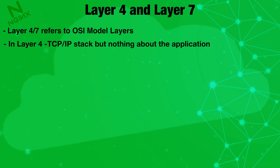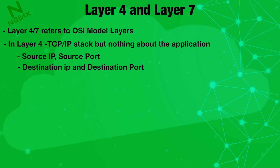At layer 4, the TCP/IP layer, we can see the source IP and source port — which tells us where the traffic or packet is coming from — and the destination IP and destination port, which tells us where the packet is destined to go.